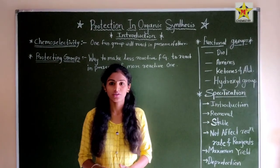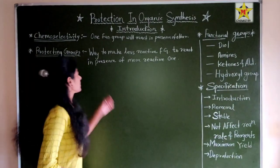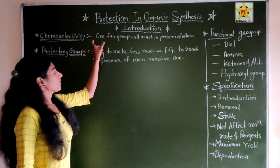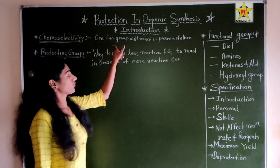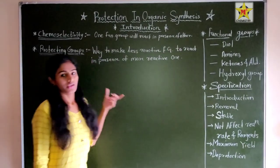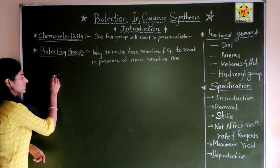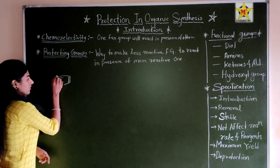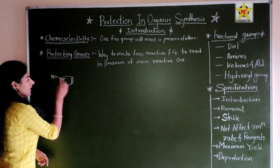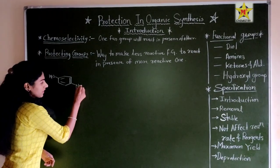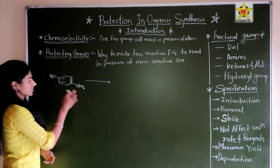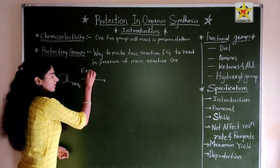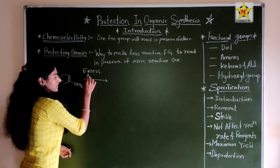For protection, we must know the term chemoselectivity. Chemoselectivity is the term in which, in a compound, one functional group will react in the presence of another. For example, consider a compound with two functional groups — OH and NH₂. We add excess of Ac₂O (acetic anhydride) to it.